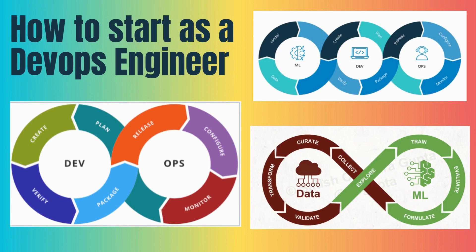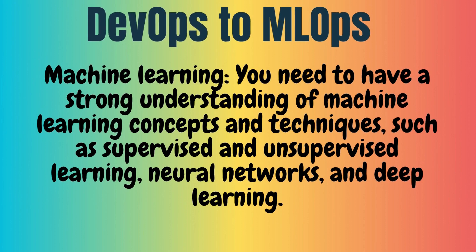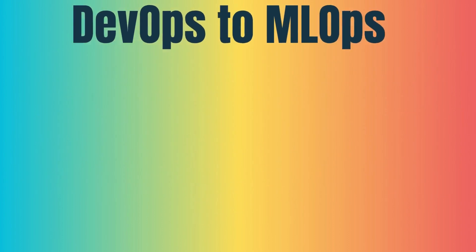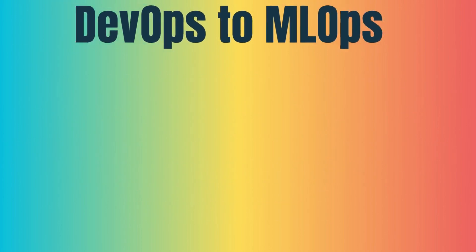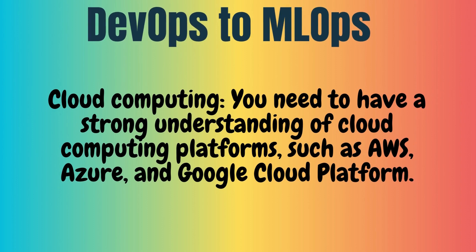In the second section, we discuss how to start as a DevOps engineer moving into MLOps. As a DevOps engineer, you already have a strong foundation in software development and operations. To become an MLOps engineer, you need to learn certain skills. First, machine learning — you need a strong understanding of machine learning concepts and techniques like supervised learning, unsupervised learning, neural networks, and deep learning. Second, DevOps — you need strong knowledge of DevOps principles such as CI/CD, infrastructure as code, and containerization. Third, cloud computing — you need a strong understanding of platforms like AWS, Azure, and Google Cloud.